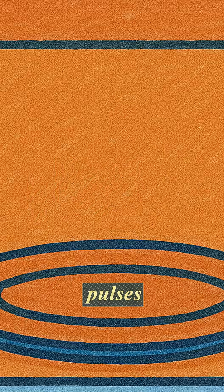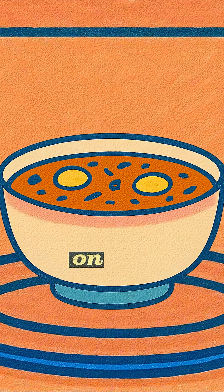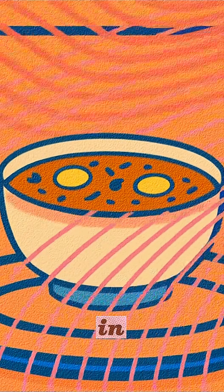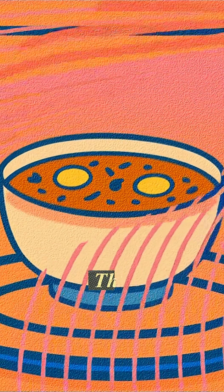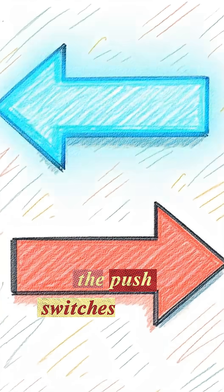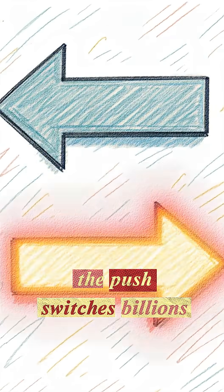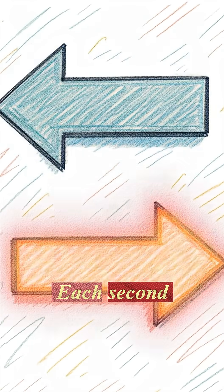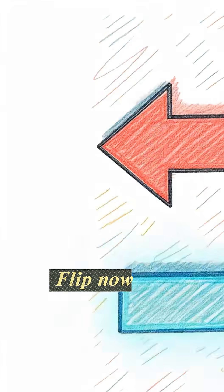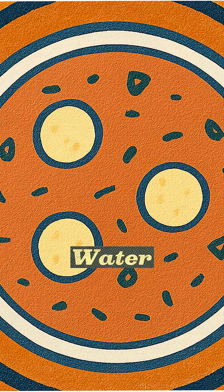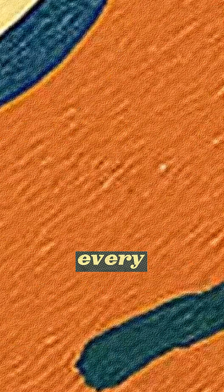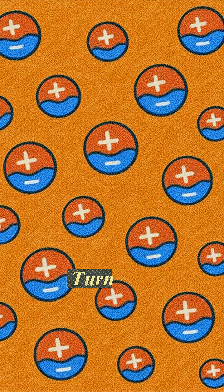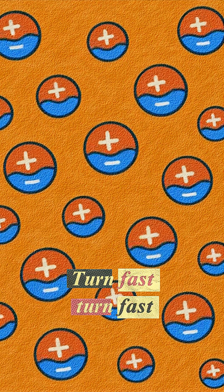Microwaves are tiny rapid pulses that push on the particles in food. The direction of the push switches billions of times each second. Water particles try to follow every switch immediately.